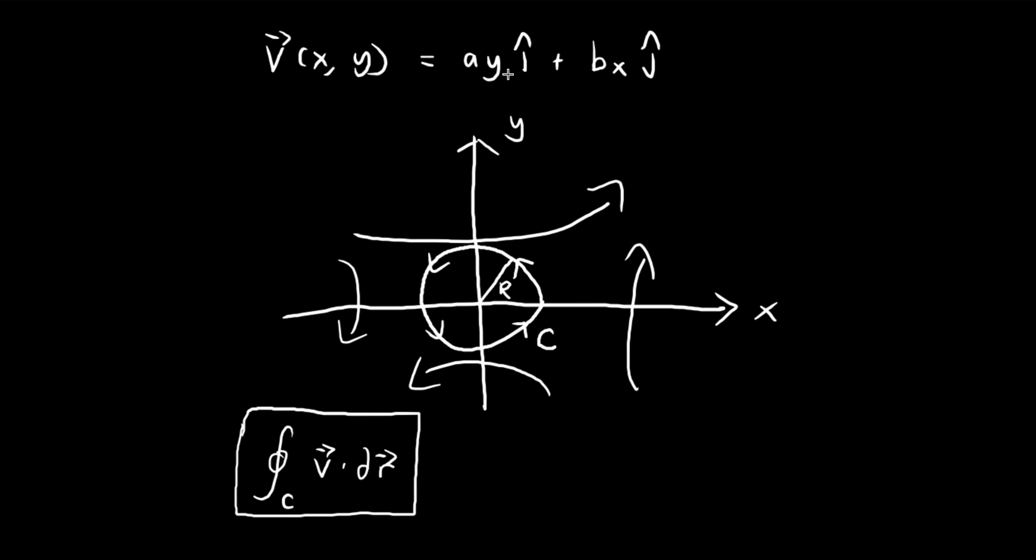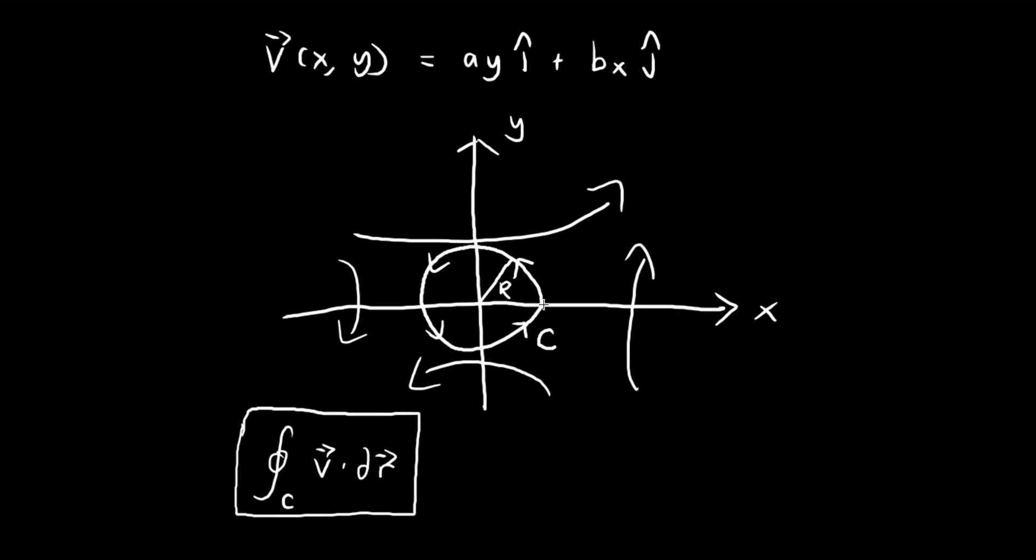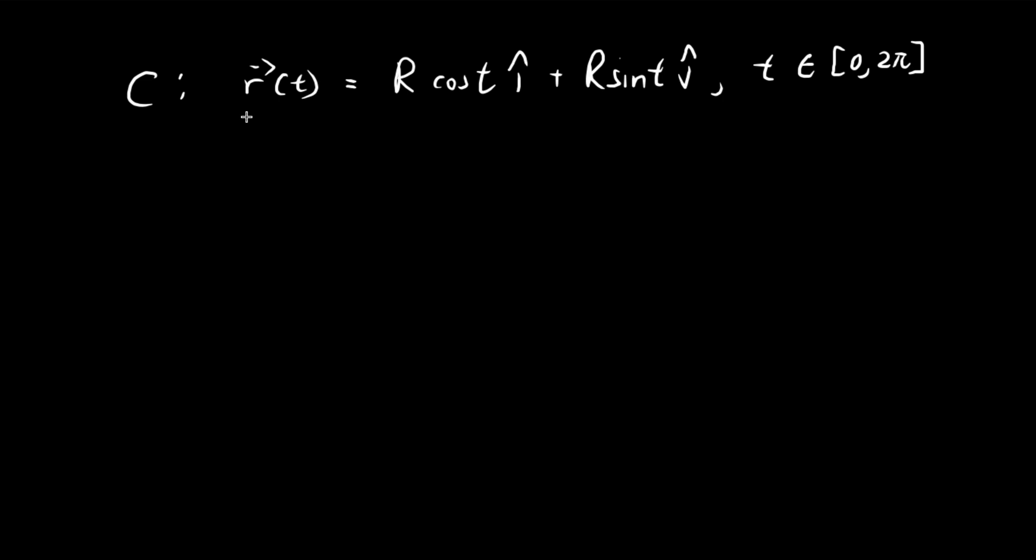In order to evaluate this integral, I'd like to first parameterize the path that we're going to take. The path can be represented by this vector-valued function. Since this is circular, it's very easy to parameterize. We can just use r cosine t and r sine t, and we will allow t to go from 0 to 2π. When t equals 0, you start at this point. As t goes on, you traverse this circle. Once t reaches 2π, you would have reached your starting point.